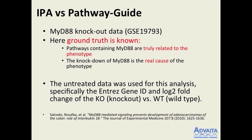So I took a knockout dataset — a situation in which the ground truth is all there. Somebody took a gene and knocked it out. So now we know exactly what the cause of the phenotype is, and we know exactly which pathways should be impacted — all pathways containing this gene should be impacted. This is a public dataset: GSE 9793, and that's the paper you have there.